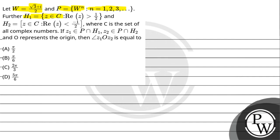Further, h1 is equal to z belonging to c such that real part of z is greater than 1 upon 2, and h2 is equal to z belonging to c such that real part of z is less than minus 1 upon 2, where c is the set of all complex numbers. If z1 belongs to p intersection h1, z2 belongs to p intersection h2 and O represents the origin, then angle z1, O, z2 is equal to?